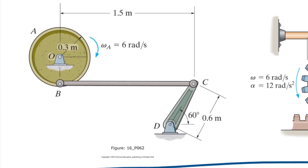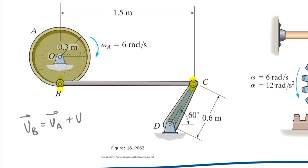One thing we can notice — and we'll zoom into each one individually — is that on this first one, points C and B are on the same body. So if I want to write the velocity version, we can say the velocity of B equals the velocity of A plus the velocity of B relative to A — two points on the same body. One key thing is that there are direct connections between all moving bodies. If you can relate the motion of a system with two points on one body and there are direct connections between all moving bodies, you can use equations from sections 16.5 to 16.7.